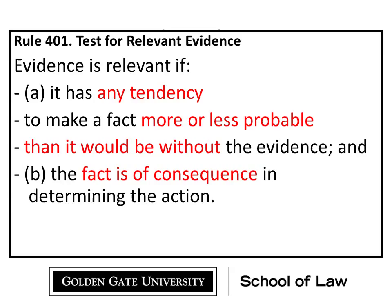To make a fact more or less probable than it would be without the evidence. Make sure you keep those two groups of operative words married: more probable than it would be without it. So it has to have some tendency to move the ball a little bit more than it would be without this evidence. It's not more probable than not — it's not a preponderance of the evidence. It's more probable than it would be if we didn't have it. Is it better to have this testimony than it would be to not? Is it better to have this exhibit than it would be to not? That's your standard.